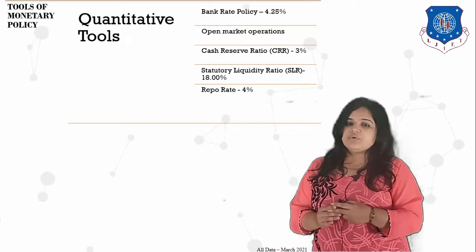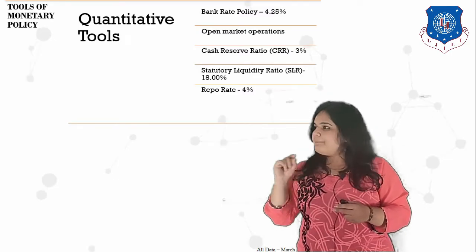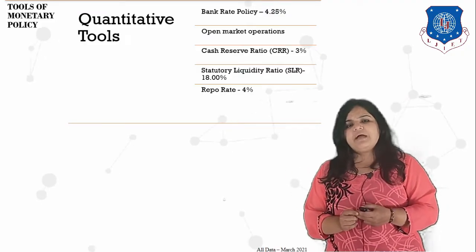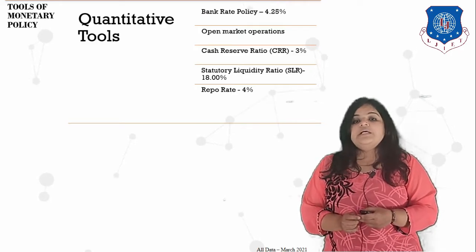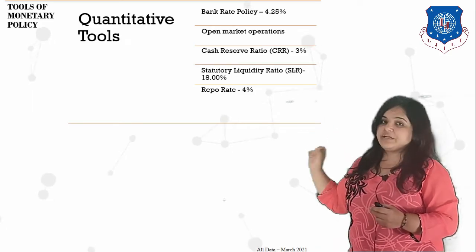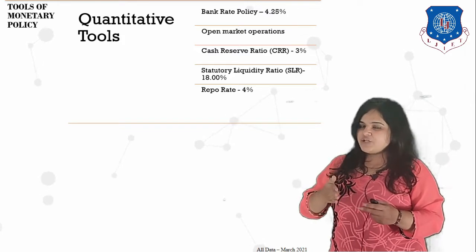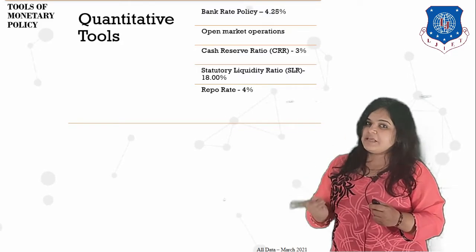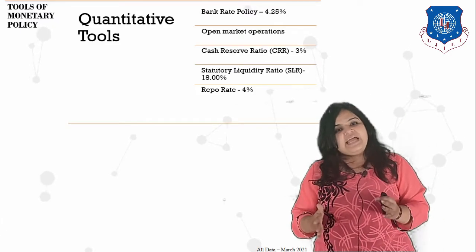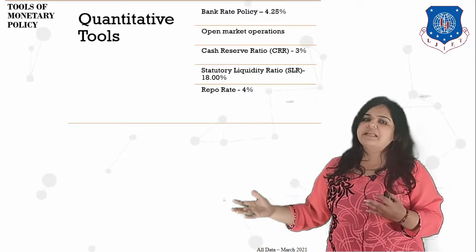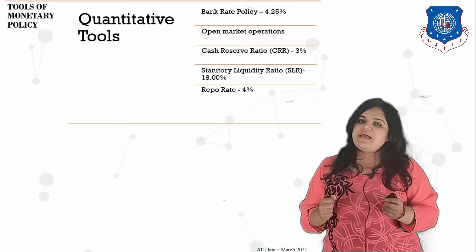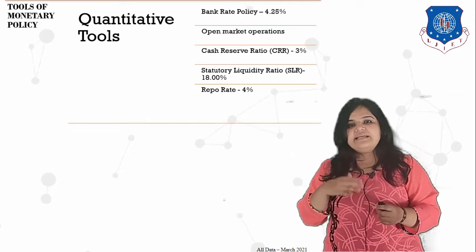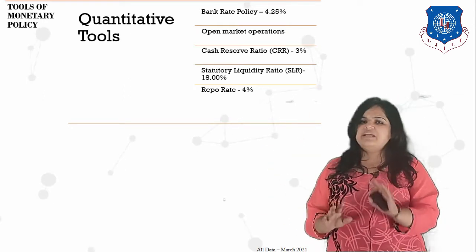One more tool is repo rate. Repo rate as of now in India is 4%. There is a difference between bank rate and repo rate: bank rate is the interest rate at which RBI lends money to commercial banks without securities, only for initial working capital. But if at some point a bank like SBI is out of money — it has given out much of its money as loans, has maintained CRR and SLR, but wants to extend more loans — it will move to the lender of last resort, which is RBI.